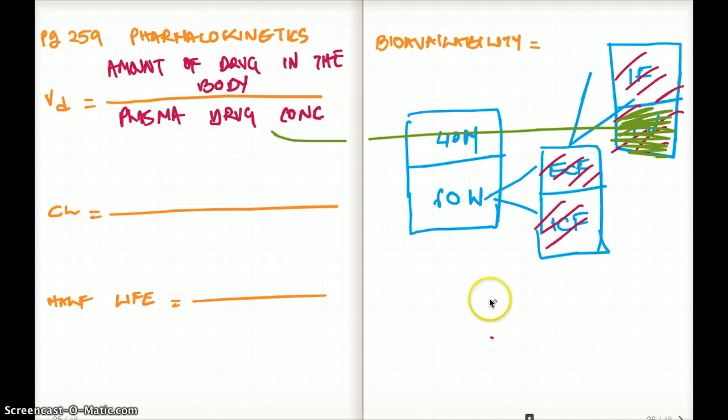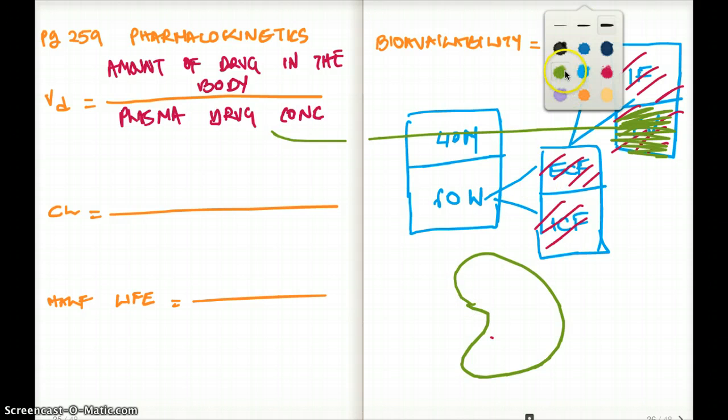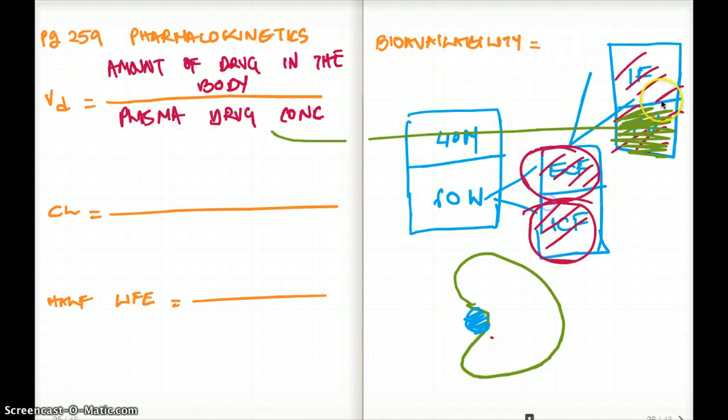Whenever a drug is present in the plasma, imagine this is our albumin and this is our drug. It has to be bound to our albumin. Plasma drug concentration is the concentration of a drug that is bound to albumin. But amount of drug in the body can be present anywhere - extracellular, intracellular, interstitial fluid, or plasma volume. So that's the total amount of drug in the body divided by plasma drug concentration. That is volume distribution.